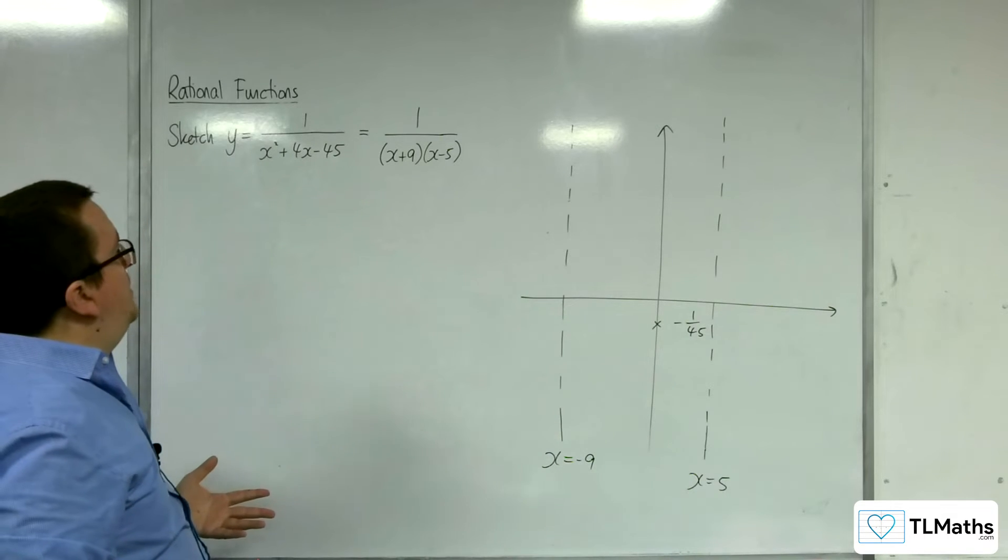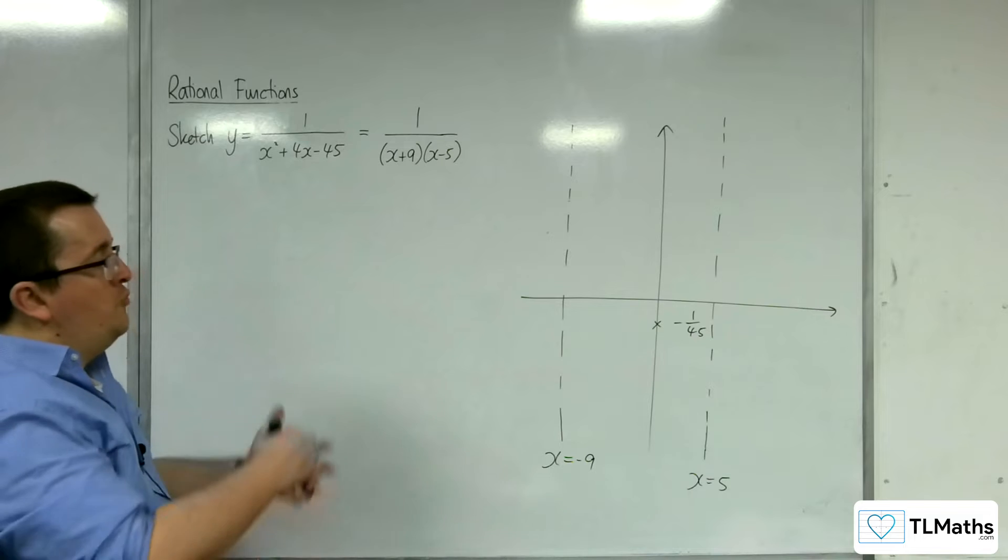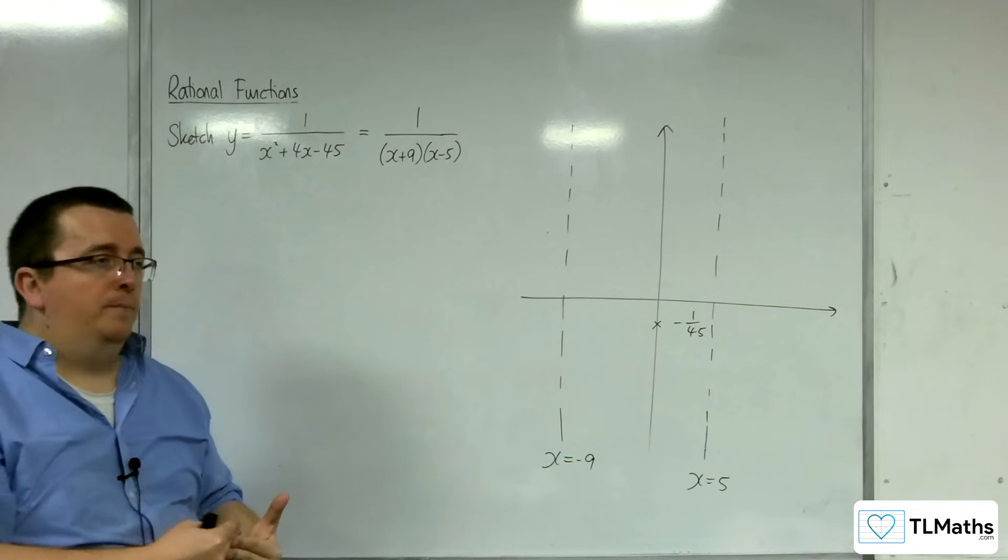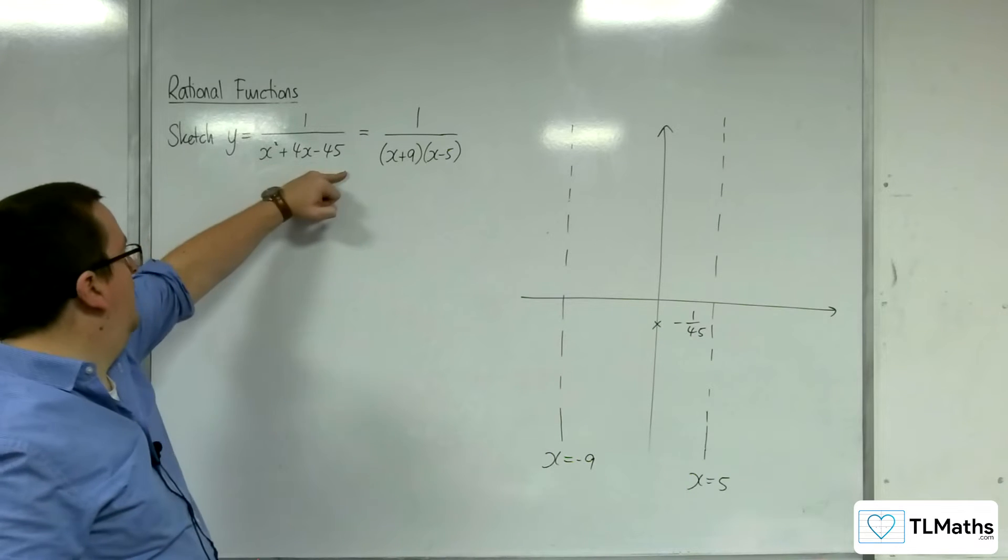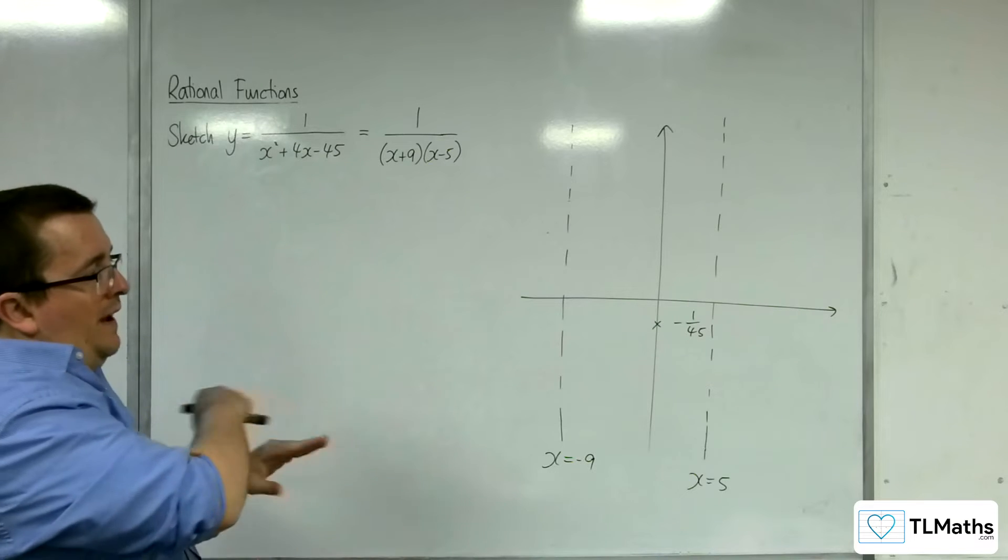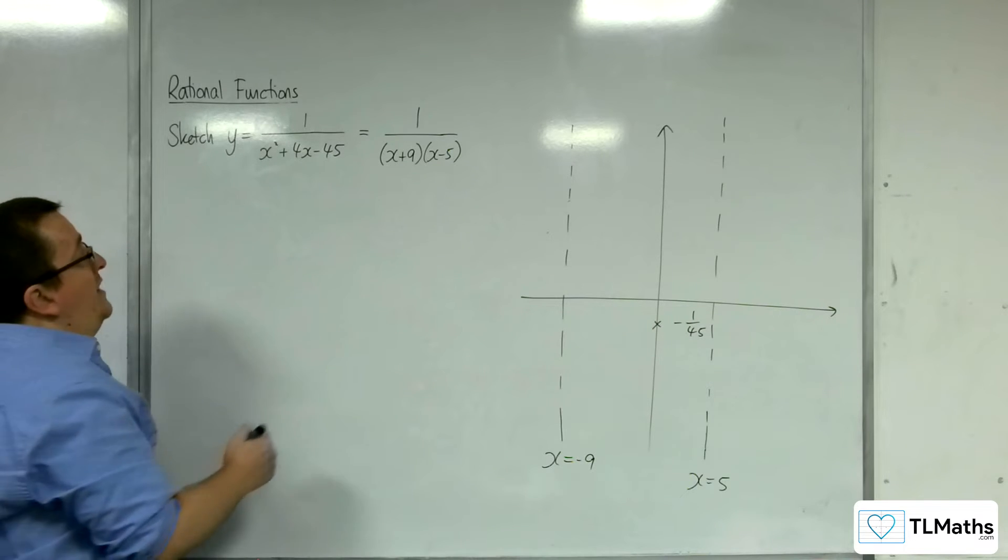Right, how about horizontal asymptote? Well, because the order of the polynomial in the numerator is 0, less than the order of the polynomial in the denominator, which is 2, that must mean that y equals 0 will be a horizontal asymptote.